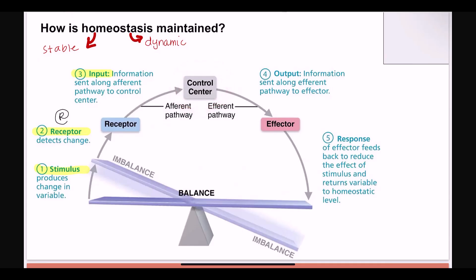The control center is usually the brain, or some part of the CNS. This pathway going toward the important thing — the afferent pathway — leads us to the brain usually. The control center will make a decision about what's supposed to happen and send that information down the line to the folks that need to deal with it. That's step four: the output, sent along the efferent pathway. Efferent is exiting the control center, usually the brain.